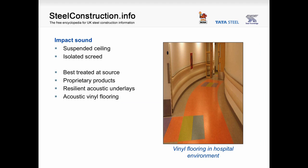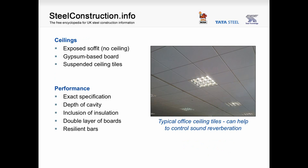Impact sound is an important criterion for floor construction. This can be assisted by the suspended ceiling system used, and isolated screeds are particularly effective. However, impact sound is best treated at the source. Proprietary products include resilient acoustic layers and acoustic vinyl flooring, commonly used in hospitals and schools, which can reduce impact sound by 10 to 20 decibels. The types of ceilings applied in buildings can vary enormously — from no ceiling with an exposed soffit, to solid plasterboard ceilings common in residential buildings, to suspended ceiling tiles on a metal frame in office buildings.